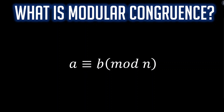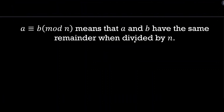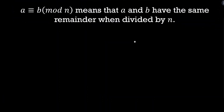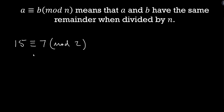What does this mean: a is congruent to b mod n? The most intuitive way to think about it is that a is congruent to b mod n means that a and b have the same remainder when divided by n. For example, 15 is congruent to 7 mod 2, because when I divide 15 by 2 I have a remainder of 1, and when I divide 7 by 2 I have a remainder of 1. Same remainder when divided by 2, therefore 15 and 7 are congruent mod 2.